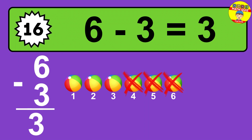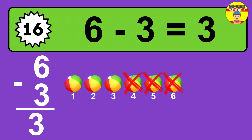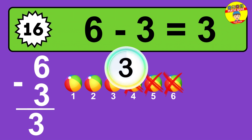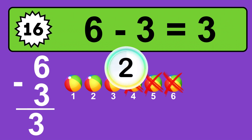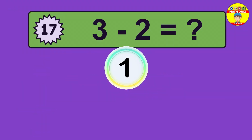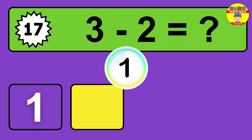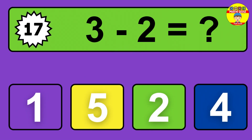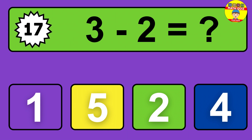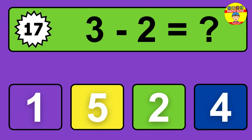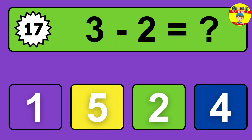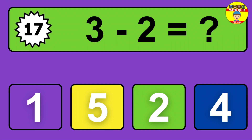Question eighteen: nine minus seven equals what? The answer is nine minus seven is two. Let's count it: one, two.